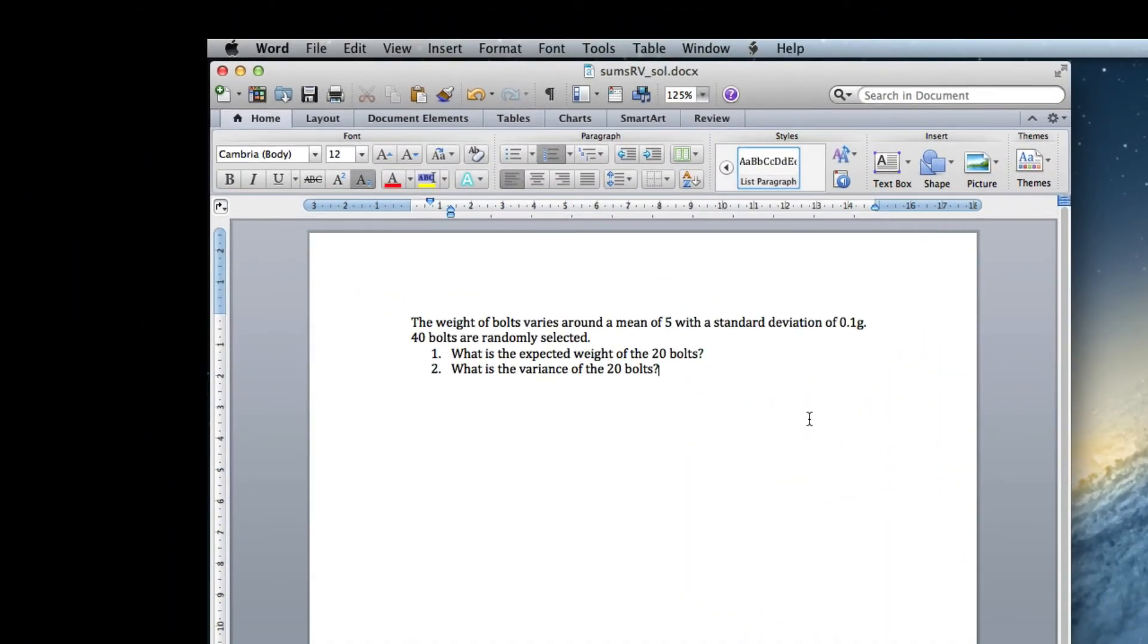Okay, this one's on sums of random variables. We've got bolts with an expected value of 5, a standard deviation of 0.1, and forty bolts are randomly selected. What is the expected weight of the 40 bolts and the variance of the 40 bolts?